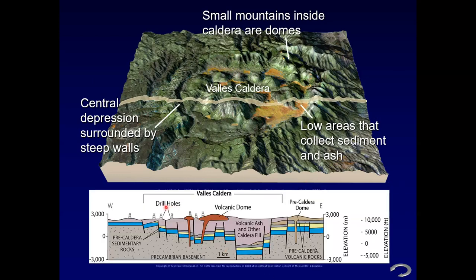Here's a cross section of the Valles Caldera. A huge volume of magma erupted from a shallow magma chamber, and then faulted blocks dropped relative to rocks outside of the caldera — that's your depression. There are thick layers of volcanic ash inside and outside of the caldera, and the hills inside are rhyolite domes constructed after the main eruption.